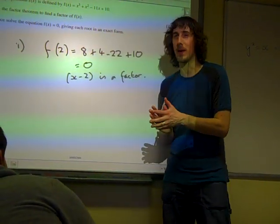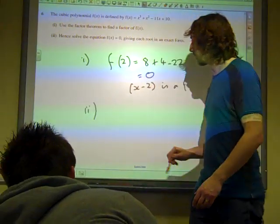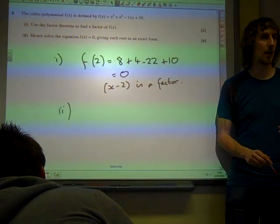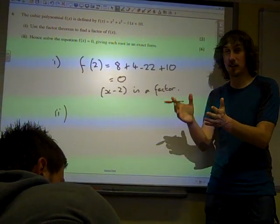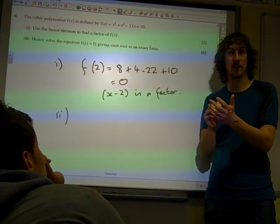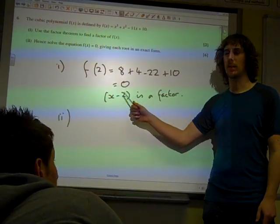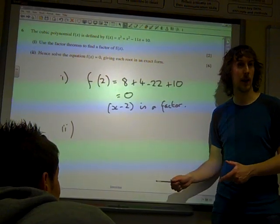Part 2. Hence, solve the equation f of x equals 0, giving each root in an exact form. Right, this is where we actually have quite a few choices about how we're going to do it. I suppose if you want to play it completely safe with this, then your first step would be to say x minus 2 is a factor. Let's do long division and find the other factor.